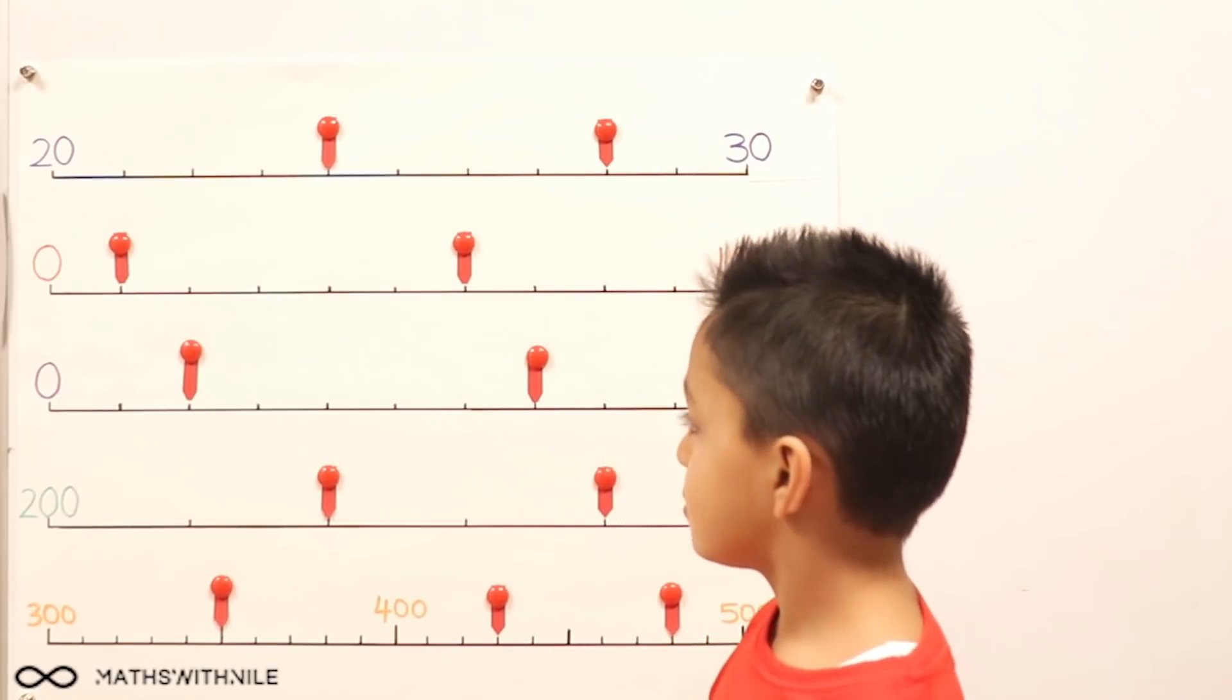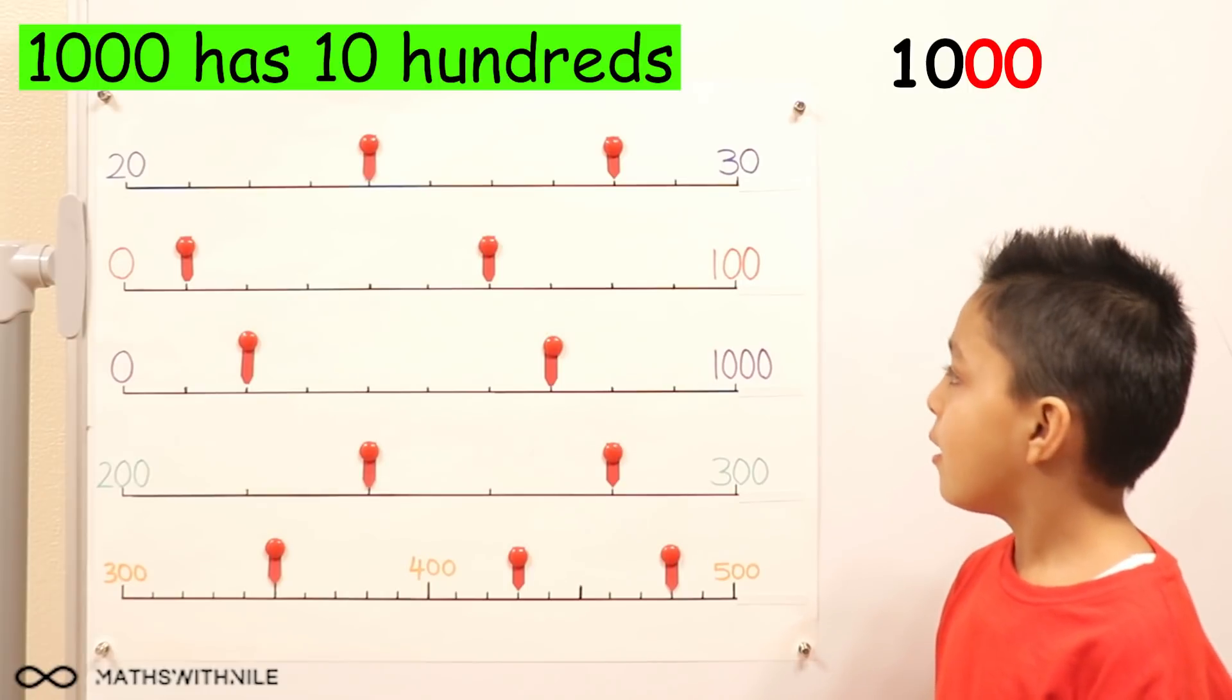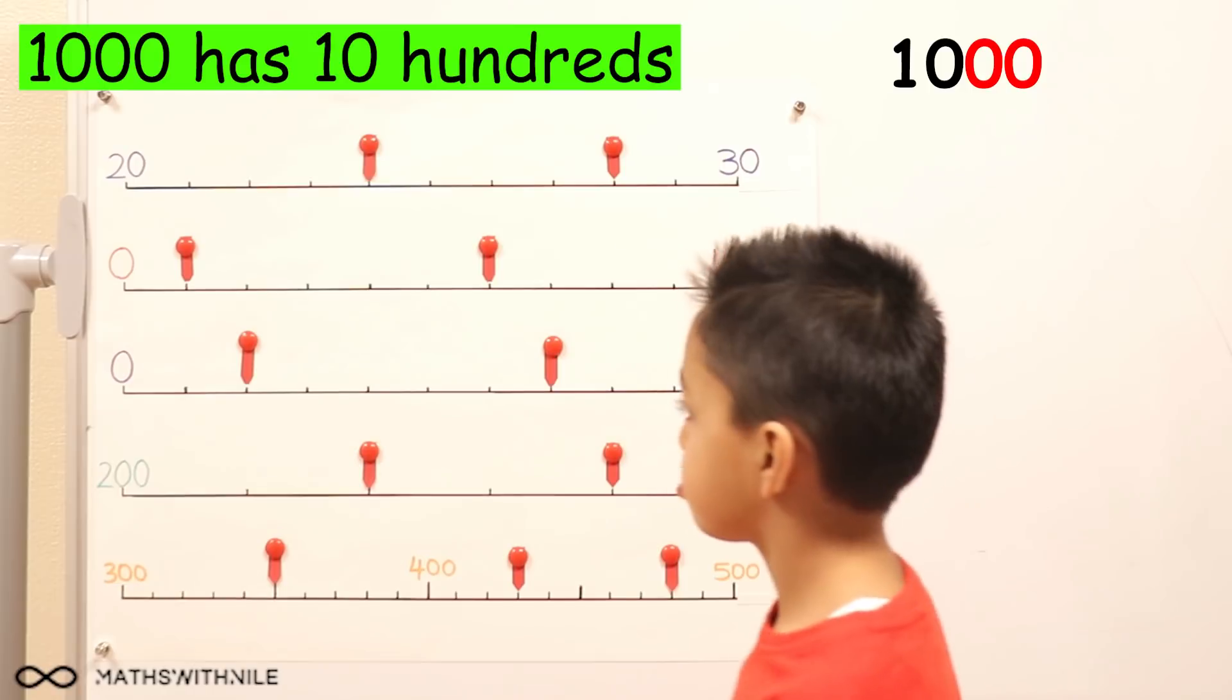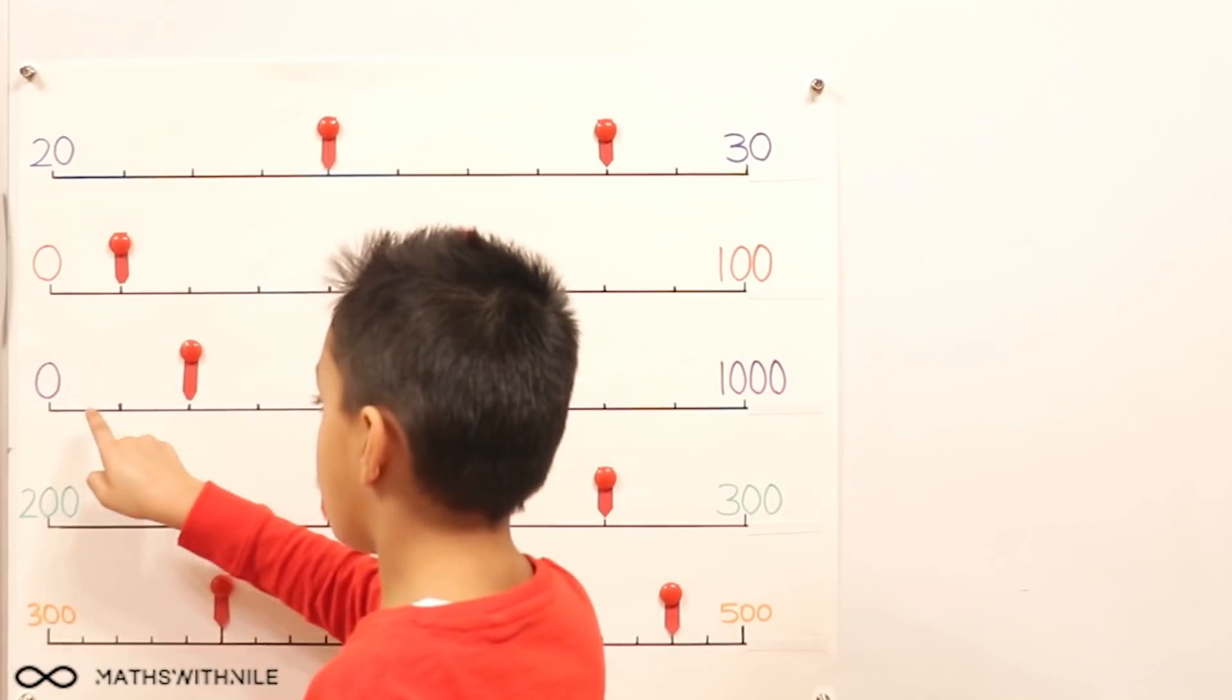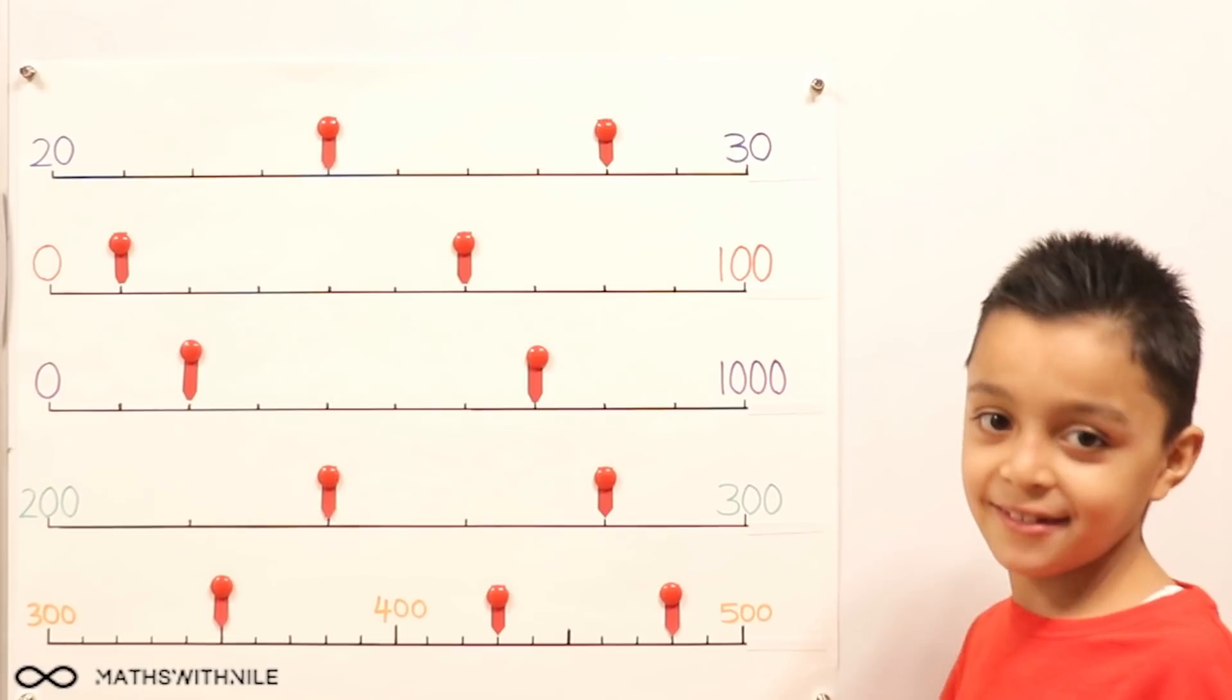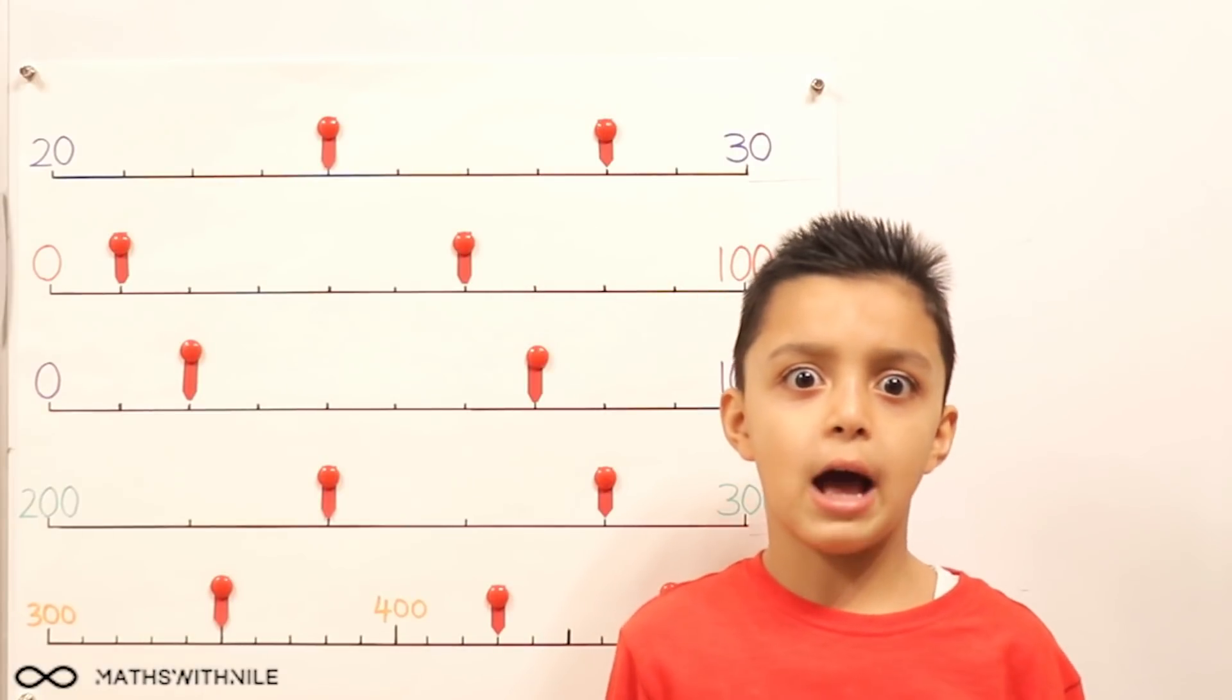Let's look at the third question. Zero to 1,000. And if you didn't know, there are 10 hundreds in 1,000. Just got to count how many. So how many spaces? One, two, three, four, five, six, seven, eight, nine, 10. Ten again, 10 spaces again. That rhymes. And the difference between 0 and 1,000 is 1,000.